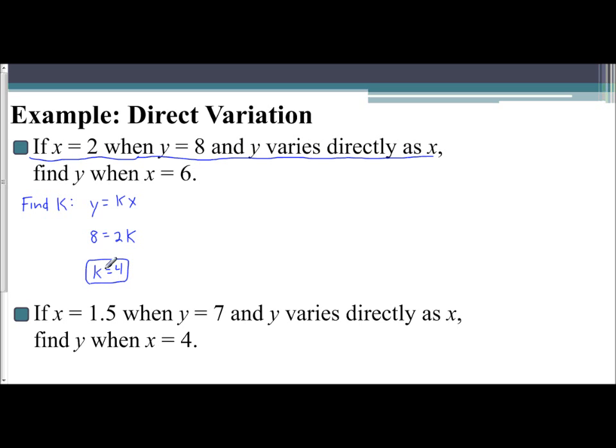Now you know your constant of variation. In this second part, find y when x equals 6. You know y equals k times x. You now know k is 4, and you're told x equals 6. So y equals 4 times 6, y equals 24. There's your answer.